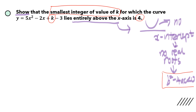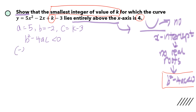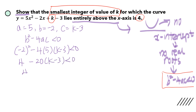Let's write down the values: a is 5, b is the coefficient of x which is negative 2, and c is anything not belonging to the x squared or x term, so that's k minus 3. We substitute into b squared minus 4ac less than zero. Make sure you bracket negative 2 before squaring, because it's a negative value. So: negative 2 squared minus 4 times 5 times (k minus 3) less than zero. That gives us 4 minus 20(k minus 3) less than zero.